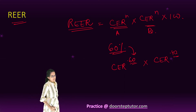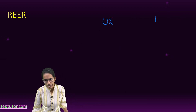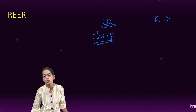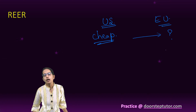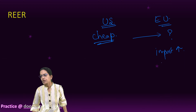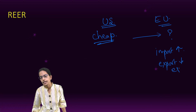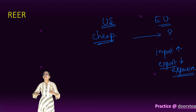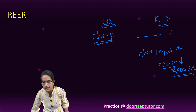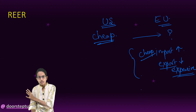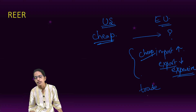Consider trade between the US and the European Union. If the US currency becomes very cheap compared to the euro, what happens for the European Union? Imports would suddenly increase because US goods are cheaper, while exports from the EU would decline because they become expensive for US buyers. Since exports become expensive and imports increase due to the lower exchange rate, the EU would be importing more.